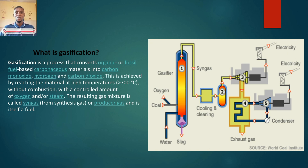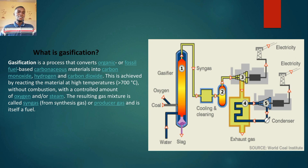This is achieved by reacting the material at high temperatures — above 700 degrees Celsius — without combustion. This tells us there is a condition for the reaction. In chemistry, the conditions at which you subject a reactant will determine the product you get. I think it also applies to life: the conditions that affect you determine your output. But it is more evident in chemistry.